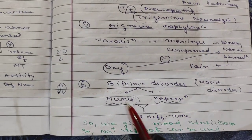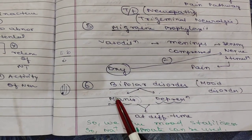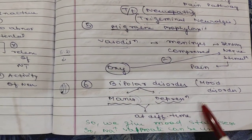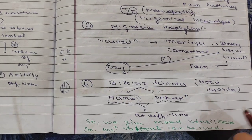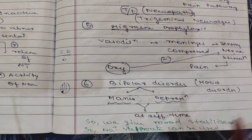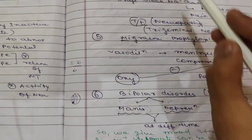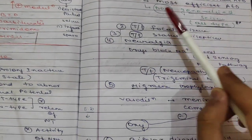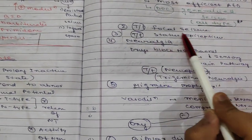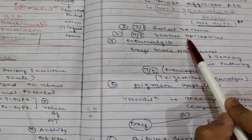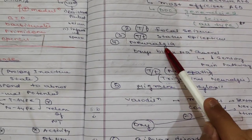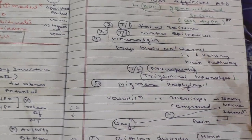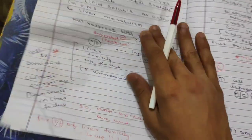Sodium valproate can also be used for bipolar disorder — both mania and depression — and is known as a mood stabilizer. In summary, the key indications are: generalized seizure (drug of choice), focal seizure, status epilepticus, neuralgia, migraine prophylaxis, and bipolar disorder.